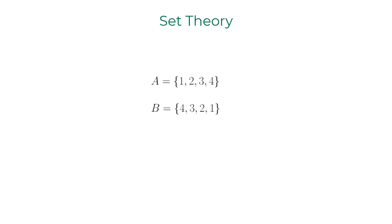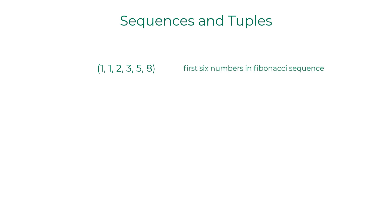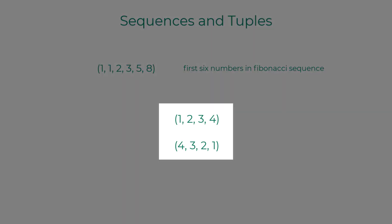Sets are unordered. For instance, the two sets shown here are equivalent. If we like to impose order to the elements in a set, we resort to sequences and tuples. We designate the sequence by writing the list of elements in a parenthesis. This means these sequences are unique and different from each other.